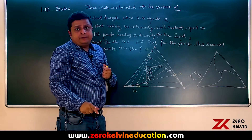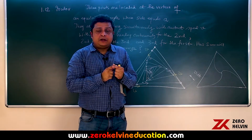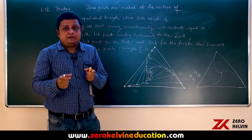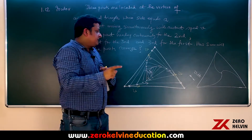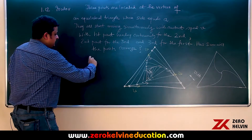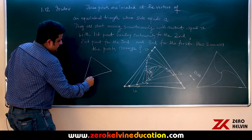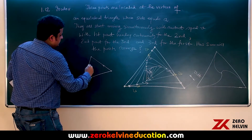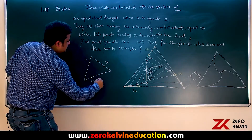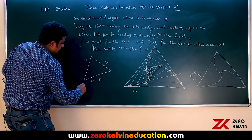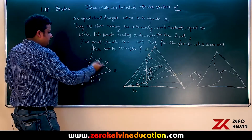At every point in time, particles 1, 2, and 3 are at the corners of an equilateral triangle. At start, the side of the equilateral triangle is A, and when they meet, the side is 0. So at a certain instant, this is the equilateral triangle with particle 1 heading towards 2, 2 towards 3, 3 towards 1. Suppose the distance between particles 1 and 2 is r; 2 and 3 is r; 3 and 1 is r — these are the sides of the equilateral triangle.